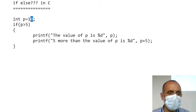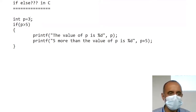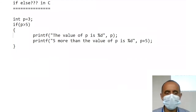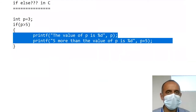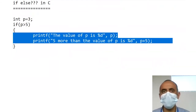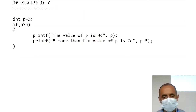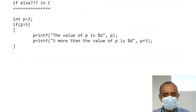If I change the value of p from 10 to 3, then what happens is that the whole code will not execute — the whole code will skip. Besides this, there is another thing: else-if.